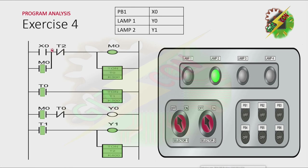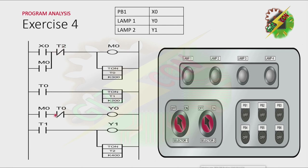Because T2 is activated, all the contacts of T2 will change. Because the T2 contact is normally closed, it will open, and that will cause M0 to be deactivated. Because of that, T0 will be deactivated also. T1 will be deactivated also. Because T1 is deactivated, the contacts of T1 will go back to their initial state, and that will cause Y1 to turn off. Because T2 is deactivated, the normally closed T2 contact and normally closed T0 contact will go back to their initial state. You need to press X0 again to repeat the cycle.